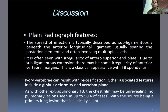Discussion — radiograph features: The spread of infection is typically described as sub-ligamentous, beneath the anterior longitudinal ligament, usually sparing the posterior elements or involving multiple levels. It is seen with irregularity of the anterior superior end plate. Due to sub-ligamentous extension, there may be irregularity of anterior vertebral margins. This is the classic appearance of TB spondylitis. As with other extra-pulmonary TB, the chest X-ray may be unrevealing, with no pulmonary lesion seen in up to 50% of cases, the source being a clinically silent primary lung lesion.